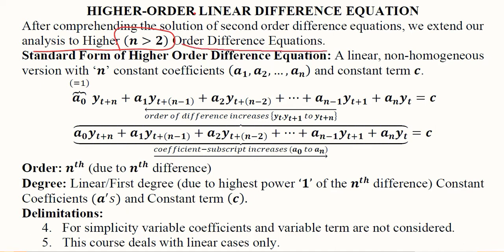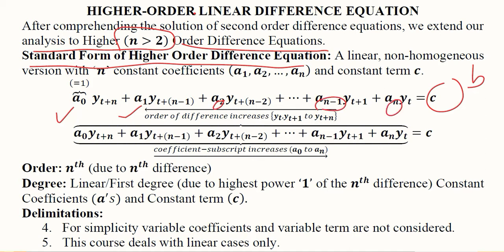This higher-order difference equation will have a standard form with a constant on the right-hand side, just like in the higher-order differential equation where the constant was b. The coefficients increase in their subscript value: a0, a1, a2, and then a(n-1) and finally the highest-order coefficient an. The variable terms are yt and its leads, with the lag or lead increasing from right to left, whereas the coefficient subscripts increase from left to right.